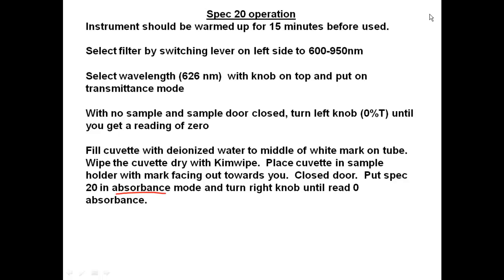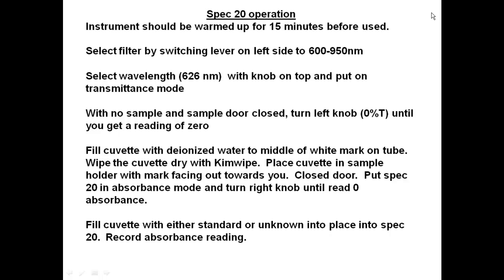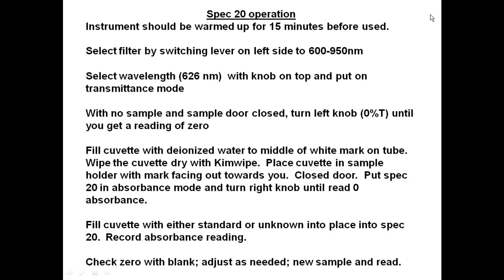Fill a cuvette with deionized water to the middle of the white mark. Wipe the cuvette, place it in the sample holder with the mark facing out, and close the door. Switch the spec 20 to absorbance mode and turn the right knob until it reads zero absorbance — meaning 100% transmittance. This calibrates the instrument for zero light and full light. Then shake your samples well, fill the other cuvette with your standard or unknown, place it in the spec 20, and record the absorbance. Check your blank between runs to ensure it still reads zero absorbance, and readjust as needed.